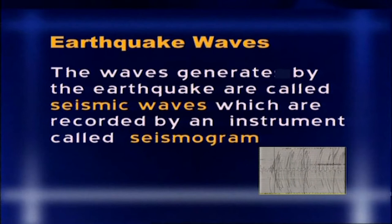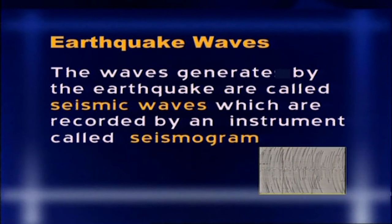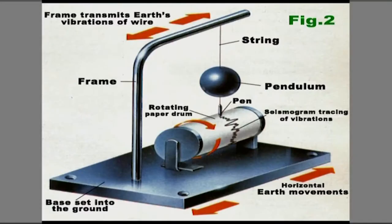The waves generated by earthquakes are called seismic waves, which are recorded by an instrument called a seismograph. To have a clear view of the seismograph, see figure number two. It has a platform made of very sensitive metal with a bent bar, a string, and at the end of the string a pendulum. The pendulum has a needle and ultimately oscillates according to the vibrations of the earth, with the movement recorded on a graph.